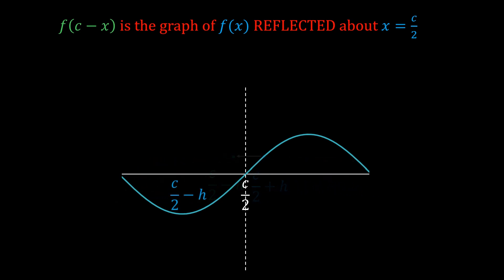And of course you can do the same thing but starting with a point on the left of c/2. So the function value here is f(c/2-h). And when you reflect this point, you get something like this.